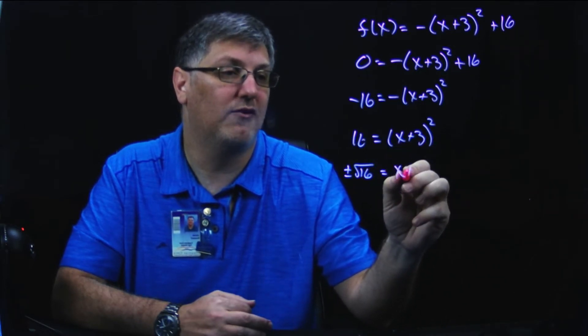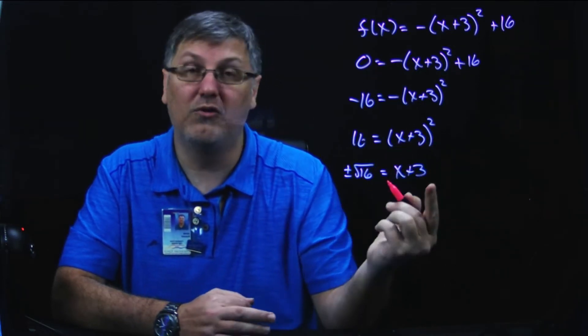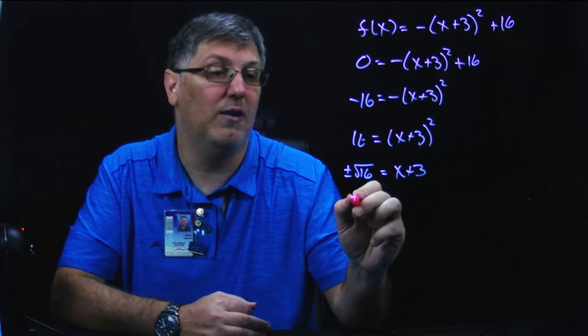So we're going to take the square root. We're going to do plus or minus the square root of 16 equals, now that I've done the square root of this, it just becomes x plus 3. Well, the square root of 16 is just 4. So now we keep our plus or minus 4 equals x plus 3.